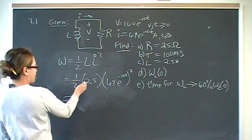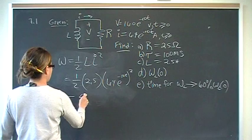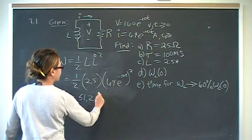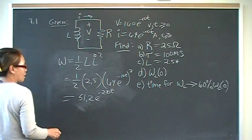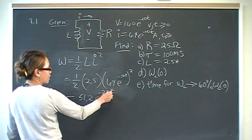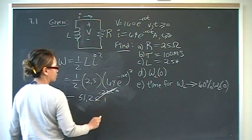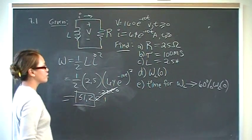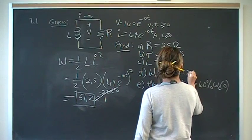Multiply this times this times 64 squared will give you 51.2, then e to the negative 10 squared is negative 20t. But we're looking at time 0, so at time 0, this is 0, and this is 1. E to the 0 power is 1, so energy at time 0 is 51.2 joules.